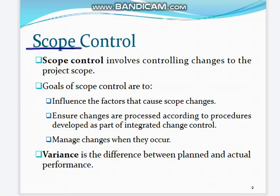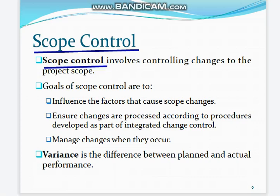Scope control involves controlling changes to the project scope. The goals of scope control are to influence the factors that cause scope changes and ensure changes are processed according to procedures developed as part of integrated change control. Many changes, when they occur, produce variance.